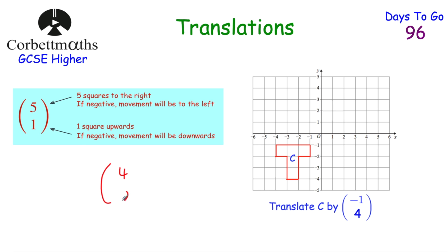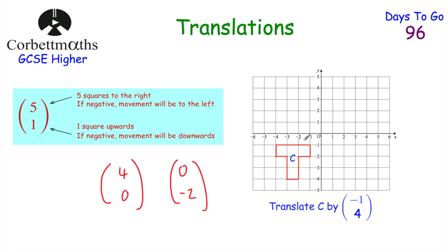If either value is zero you don't move it in that direction. For instance, (4, 0) means translate 4 squares to the right only, and (0, -2) means don't move left or right but move two squares down. Now let's have a look at our first question. Normally I'd ask you to pause and try it, but since you haven't got the grid drawn, I'll ask you to think about how you'd translate it and then recommend you print the practice questions to try. Here we've got shape C and we've been asked to translate it by the vector (-1, 4).